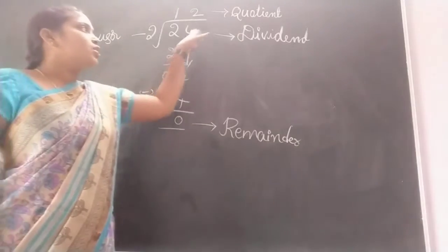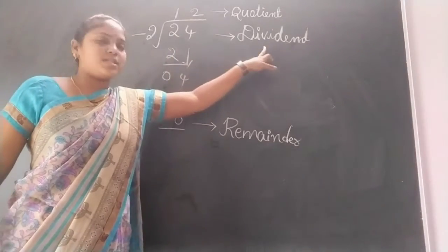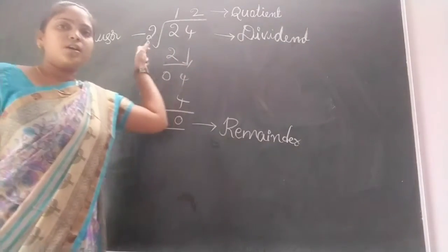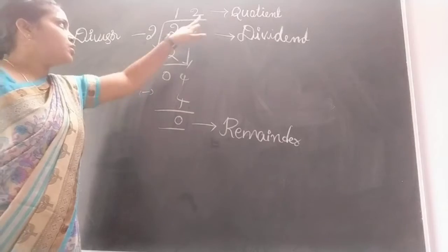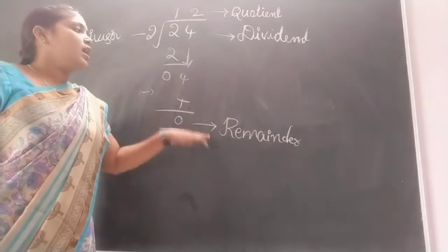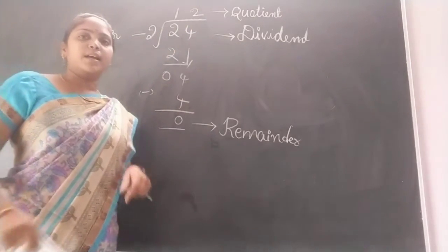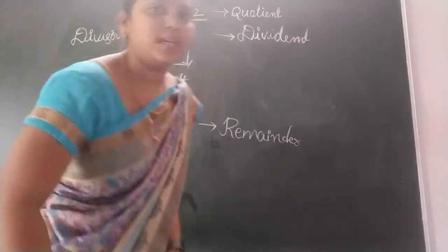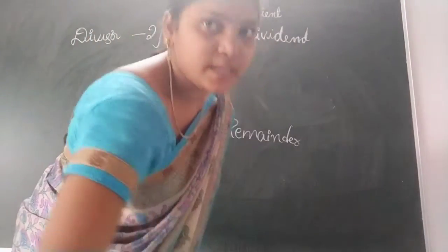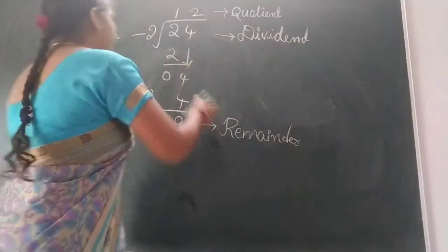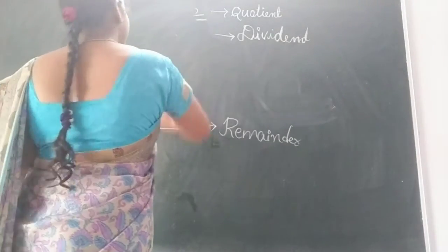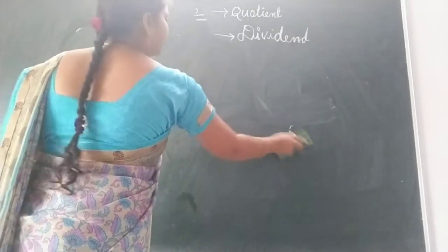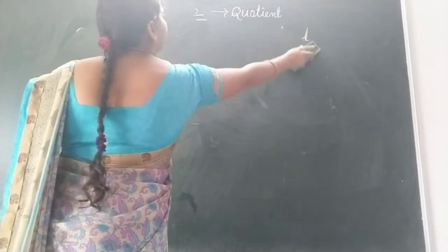So dividend, divisor, quotient and remainder — these are the elements of division.